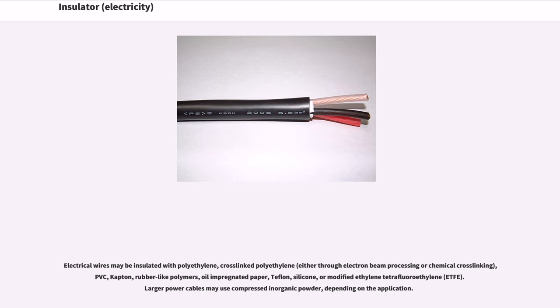Electrical wires may be insulated with polyethylene, either through electron beam processing or chemical cross-linking, PVC, Kapton, rubber-like polymers, oil-impregnated paper, Teflon, silicone, or modified ethylene tetrafluoroethylene. Larger power cables may use compressed inorganic powder, depending on the application.